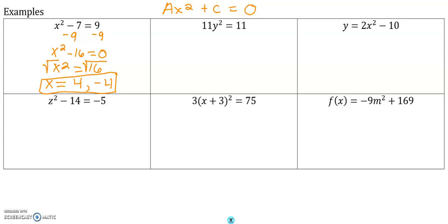Next one. I have a coefficient of 11 on y². We're actually going to divide by 11 everywhere. We'll get y² equals 1. Take the square root of both sides. And we'll get our y equaling 1, but also negative 1.